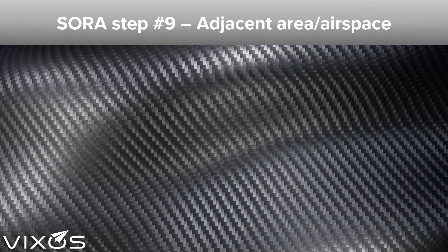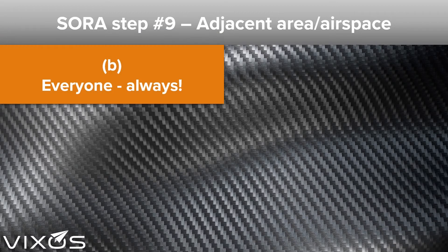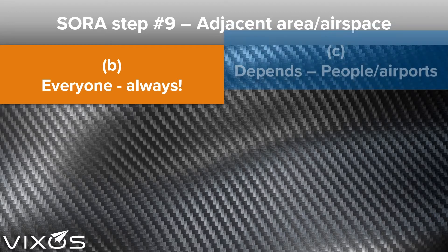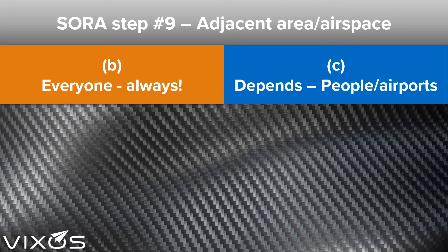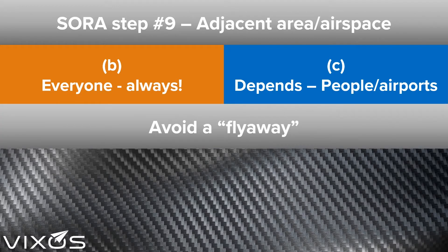The SORA step number nine has two parts. The first is part B, which applies to everyone that operates according to a SORA, and this part always applies independently of your operations. The second part is part C, which applies to some types of operations in some cases. As a rule of thumb, it applies if you fly close to gatherings of people or to airports. Both parts put some requirement on your operation in order to avoid a flyaway of your drone. A flyaway is basically the situation where the drone happily flies in some unintended direction and you aren't able to do anything about it.